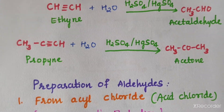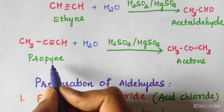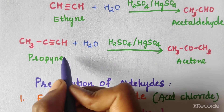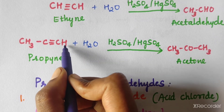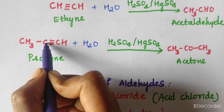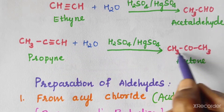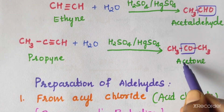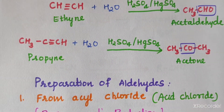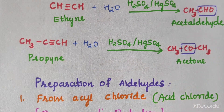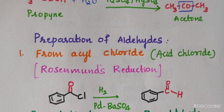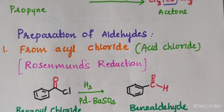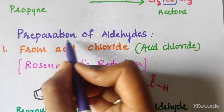For propyne, water addition in the presence of acid and HgSO4 gives a ketone — acetone. CH3C≡CH on hydration gives acetone (CH3COCH3). This is an aldehyde from terminal alkynes, and a ketone from internal alkynes. That is the common preparation method for aldehydes and ketones from alkynes.